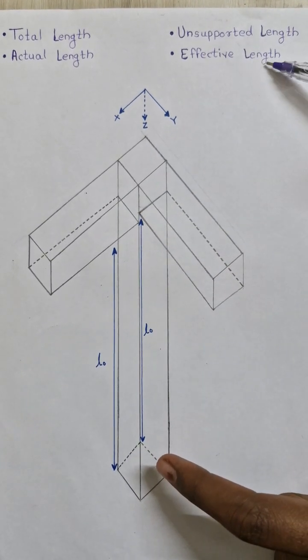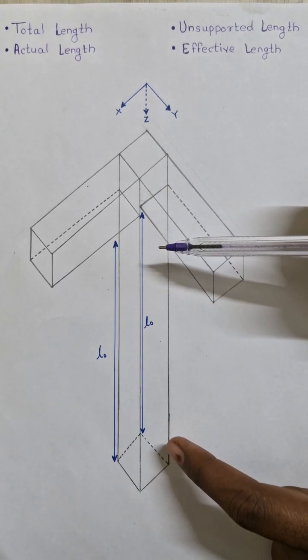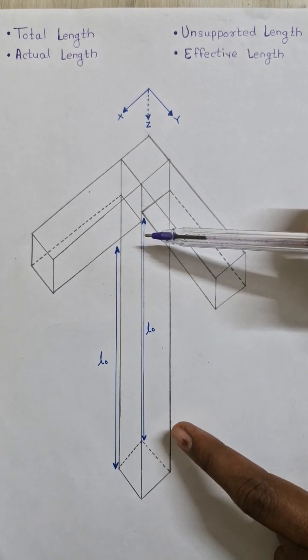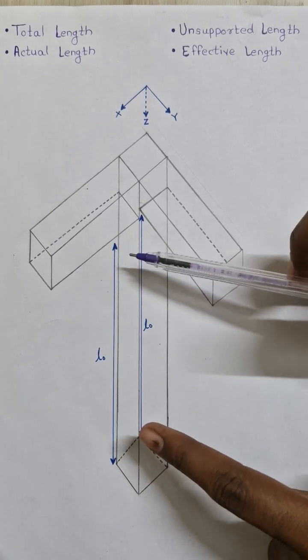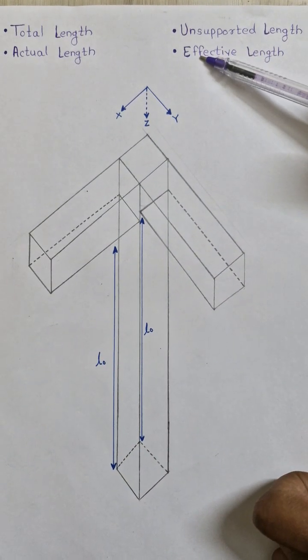And then final is the effective length. It is the length which is liable to buckling or it is the distance between point of contraflexure. This effective length is given in IS 800-2007.